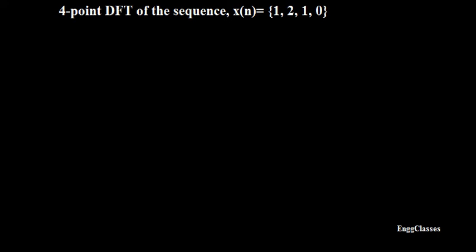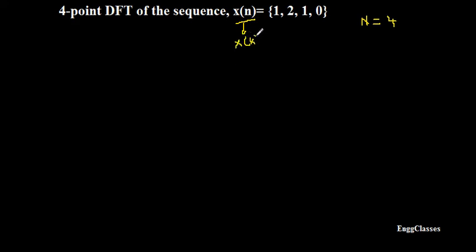Here we can make use of the matrix relation, which is the trick to find the 4-point DFT in a very easy way. We will start with the procedure. We know that the given sequence is of length 4, x of n is equal to 1, 2, 1, 0. Hence, N is equal to 4 — that means the length of the sequence is 4. X of k will also be a sequence of length 4, so I have 4 samples.